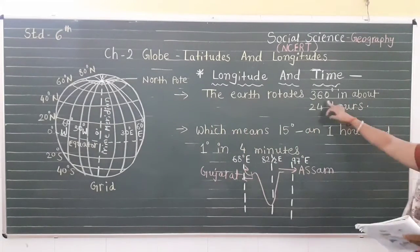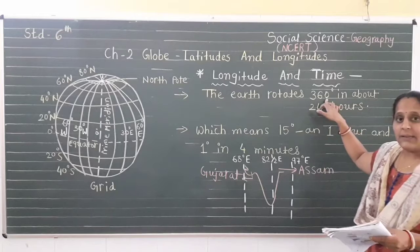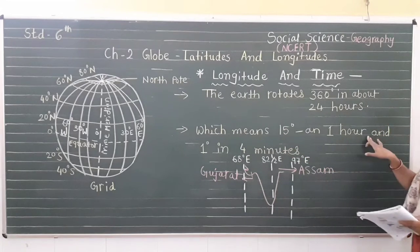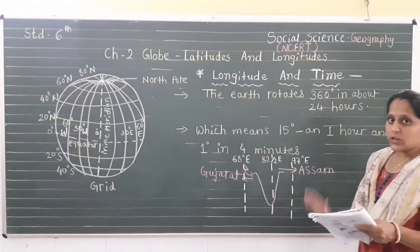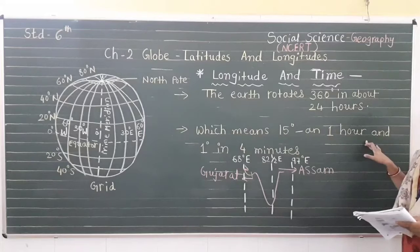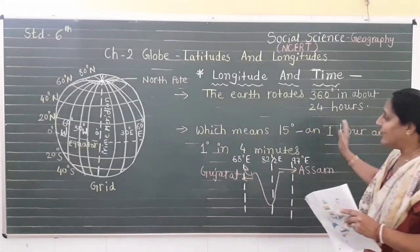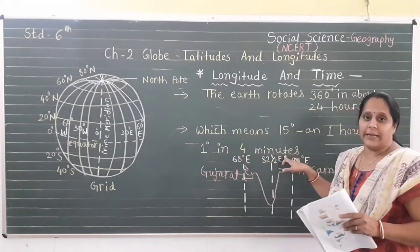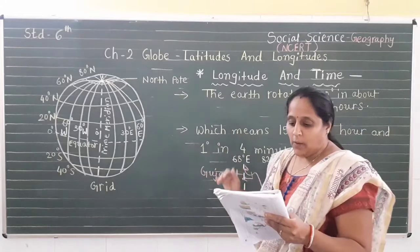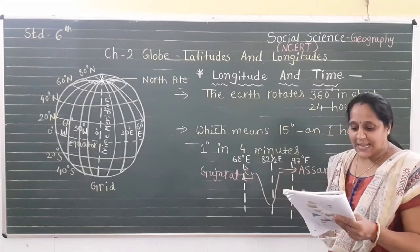The earth rotates 360 degrees in about 24 hours. So if we divide 360 by 24 we get 15, meaning the earth rotates 15 degrees per hour. In 1 hour it rotates 15 degrees, and 1 degree takes 4 minutes. Through this we can calculate the time at many different places.